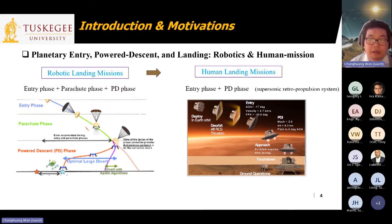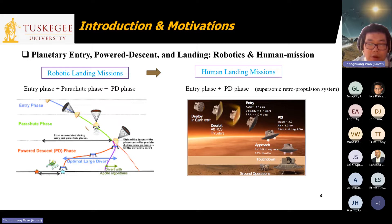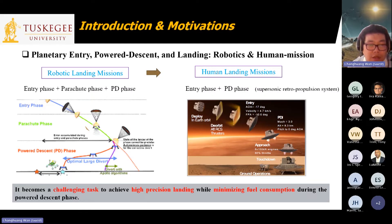As a result, the entry vehicle has to fly with a higher lift-to-drag ratio, and the powered descent replaces the parachute used in robotic landing missions. That means we only have the entry phase and powered descent phase, and the engine has to generate retro-thrust starting at supersonic speed to decelerate the human-scale lander, which will cost a large amount of fuel. Therefore, it becomes a very challenging task to achieve high-precision landing while minimizing fuel consumption during the entire entry and powered descent phases.